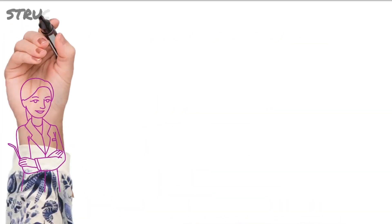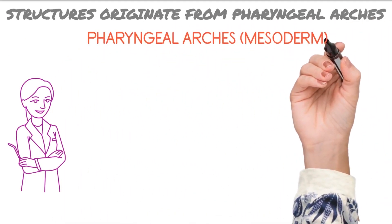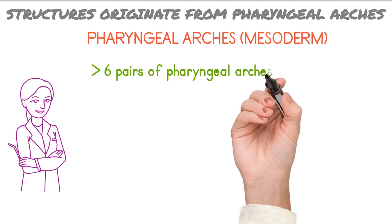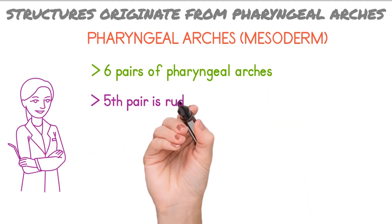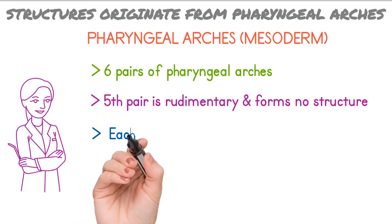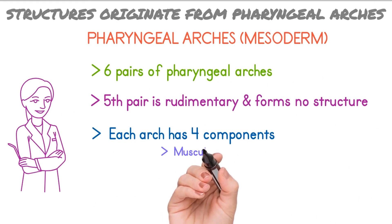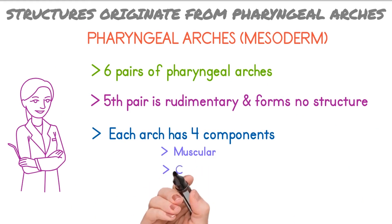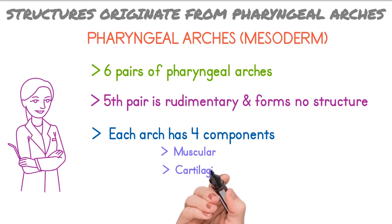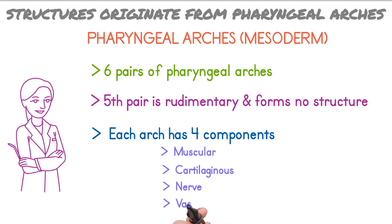Now the structures formed from pharyngeal arches: there are a total of six pairs of pharyngeal arches. The fifth pair of pharyngeal arches is rudimentary and regresses soon after development. Each arch has four components: muscular, which forms the muscles; cartilaginous, which forms the cartilage and bones; a nerve component, which gives nerve supply to the corresponding arch; and a vascular component, which gives blood supply to the arch.